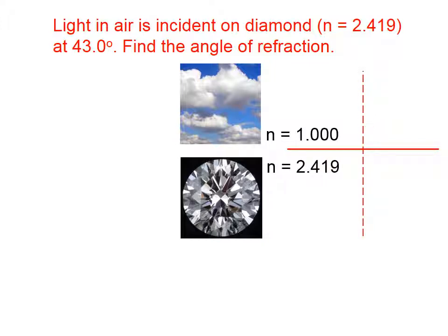We are supposed to know that the index of refraction of air is very nearly 1, and we're told the index of refraction of diamond. So it says that light is incident on the diamond. In other words, it starts out in the air at an angle of 43 degrees relative to the normal, and then it travels into the diamond.